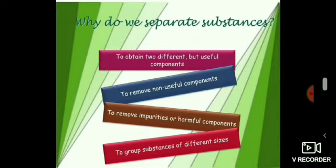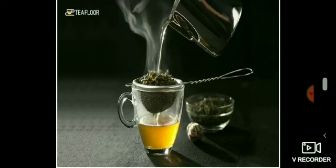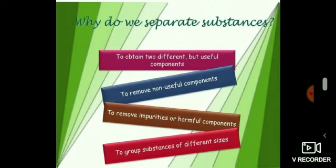All these reasons for separating mixtures into their components will become more clear from the examples which I am going to give. We make a cup of tea by boiling tea leaves in water and then adding sugar and milk. After the tea has been made, we remove the used tea leaves before drinking it. Used tea leaves are an undesirable component of the mixture called tea, and these are separated by using a filter called a tea strainer. We can conclude that one reason for separating a mixture is to remove an undesirable — that is, non-useful or unwanted — component from it.